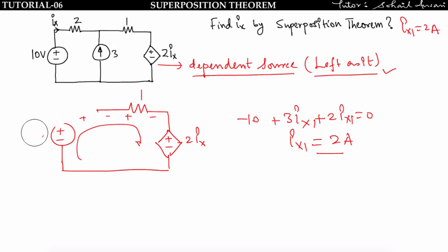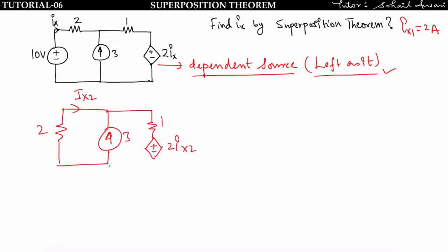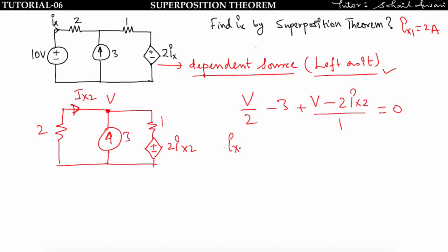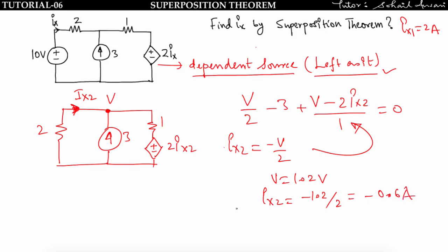Now take the 3A current source alone and short circuit the voltage source. Applying nodal: v/2 − 3 + (v − 2·ix2)/1 = 0. Since ix2 = −v/2 (flowing opposite to the assumed direction), substituting gives v = 1.2V. Hence ix2 = −1.2/2 = −0.6A. Total: ix = ix1 + ix2 = 2 + (−0.6) = 1.4A.